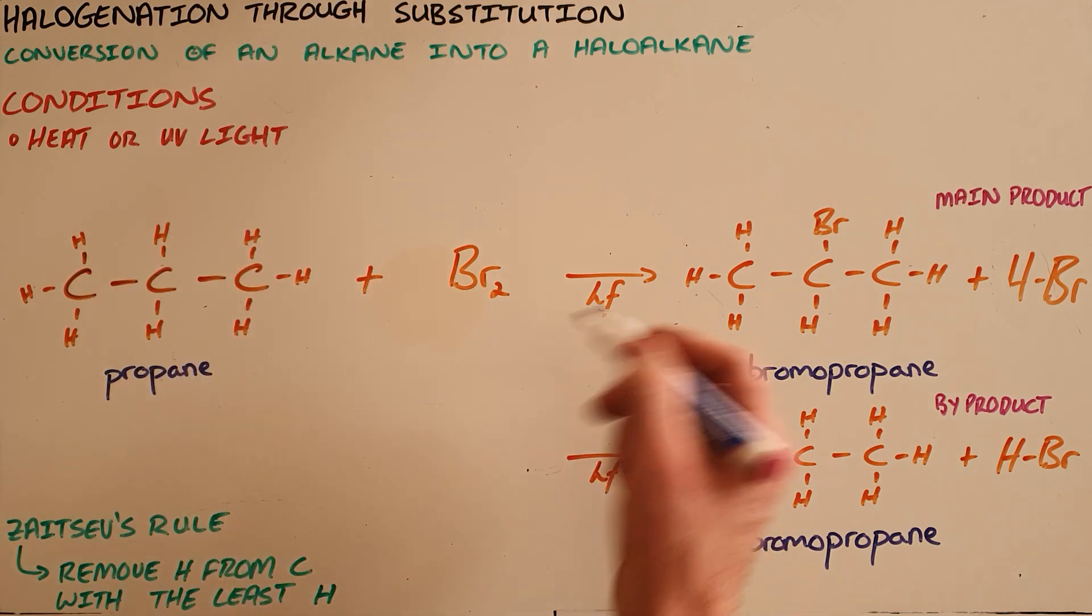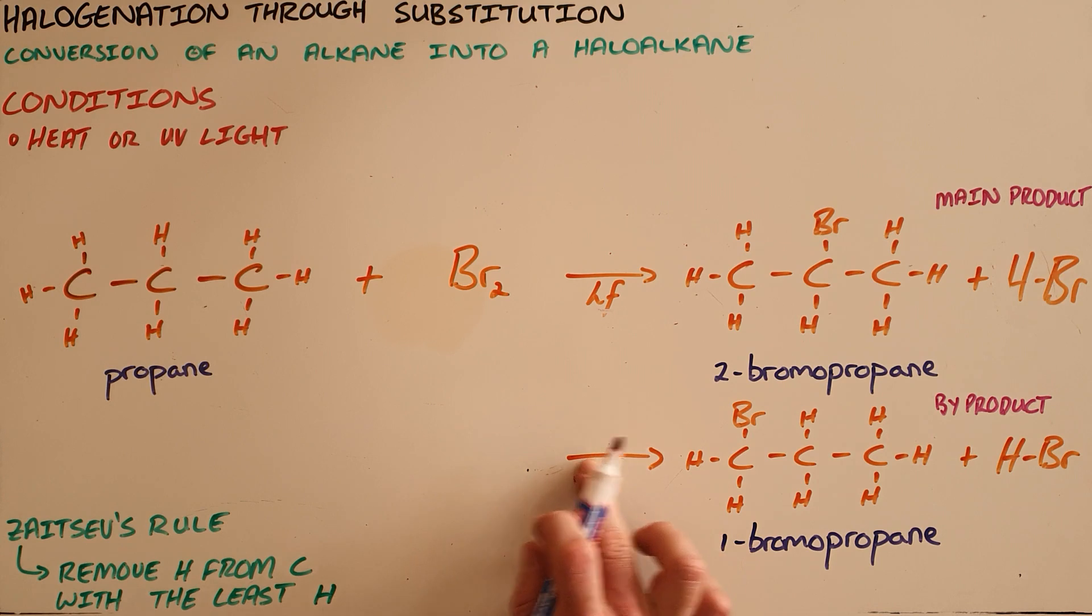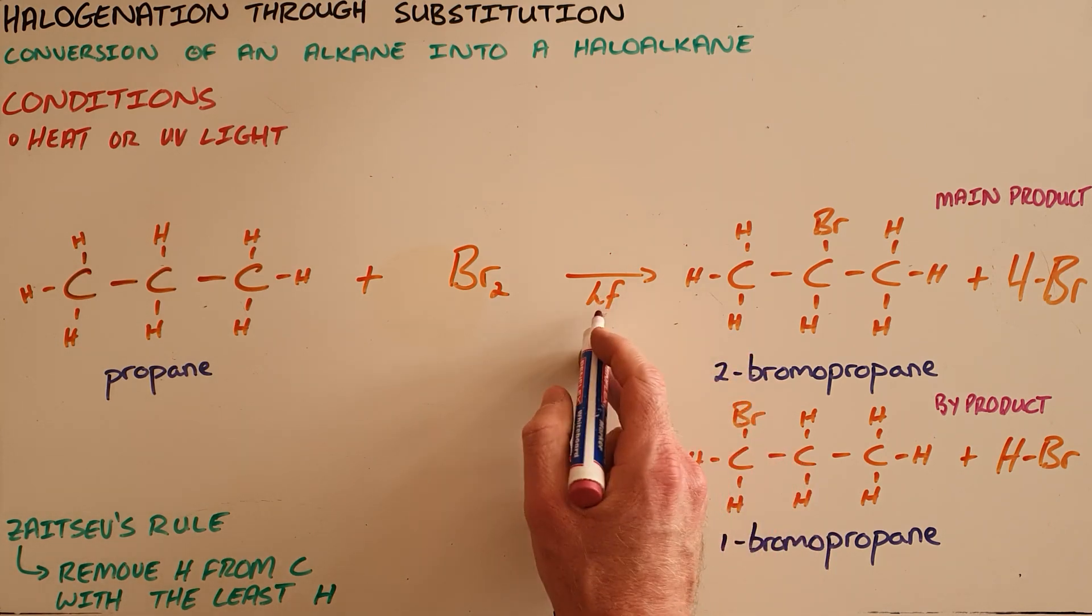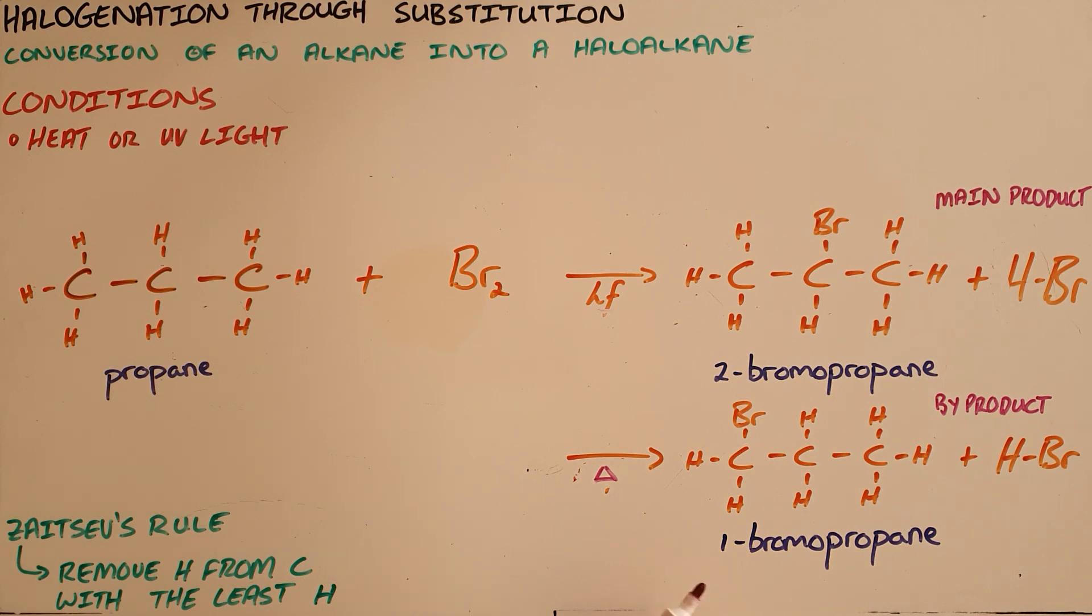Heating a reaction is shown with a triangle underneath the arrow, or UV light is shown with the symbol hν. So as an example here...